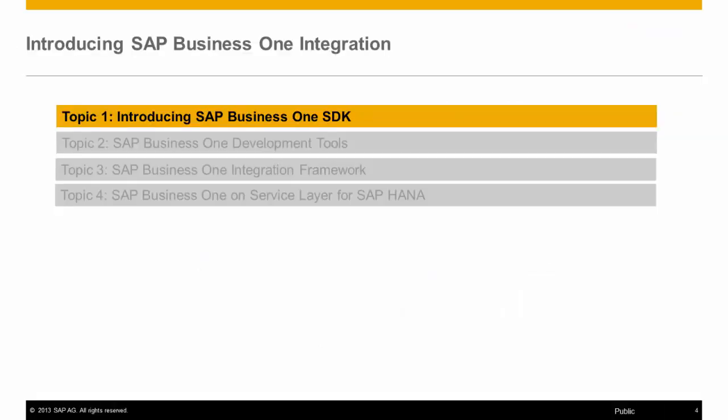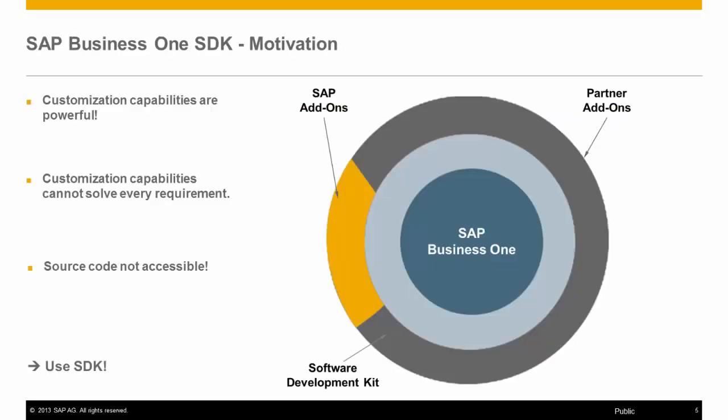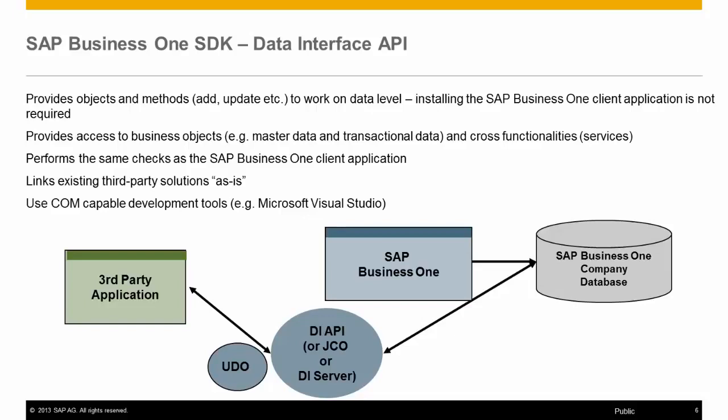Let's start by looking at the SAP Business One Software Development Kit. The SAP Business One SDK is a set of APIs that allow for integration with SAP Business One at a data and user interface level. The SAP Business One core functionality is kept separate and access to data in and out of SAP Business One is through the two APIs. The DI API, or Data Interface API, allows access to SAP Business One data through the use of object-oriented programming, such as VB.NET, C-Sharp, and many others that can interact with COM objects.